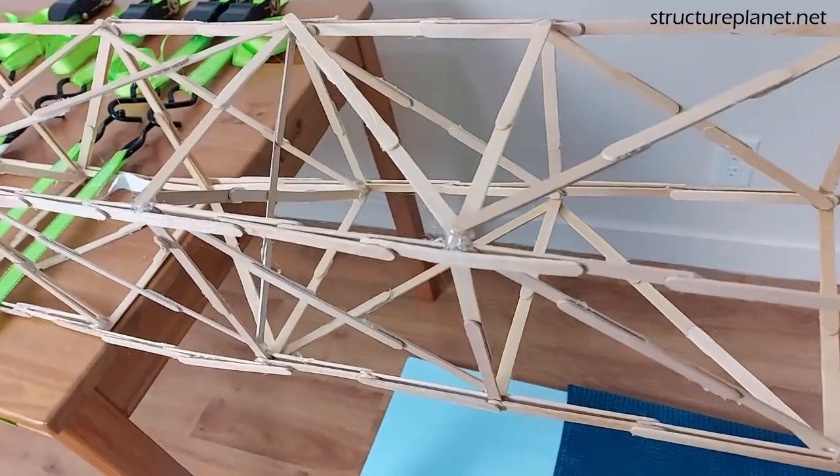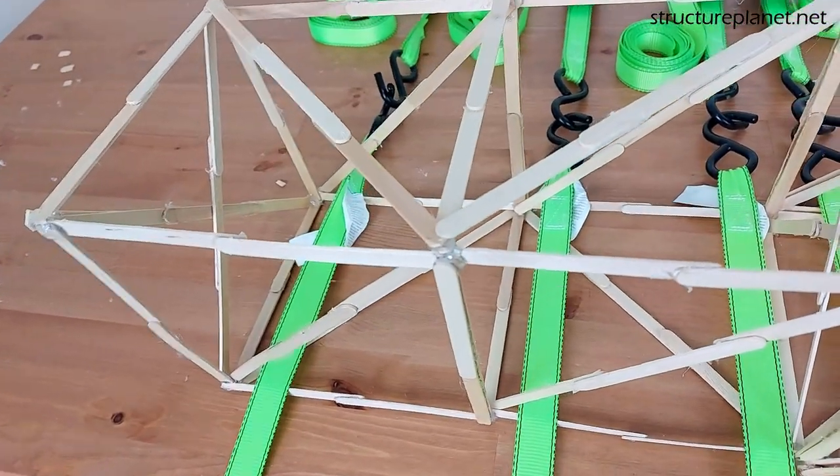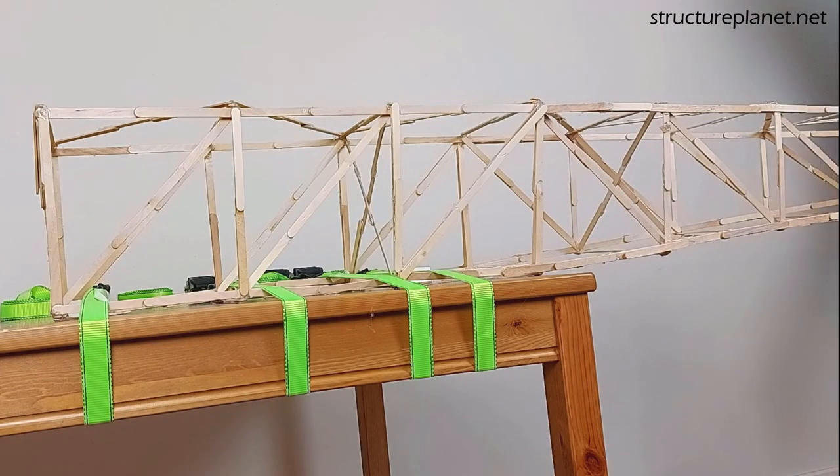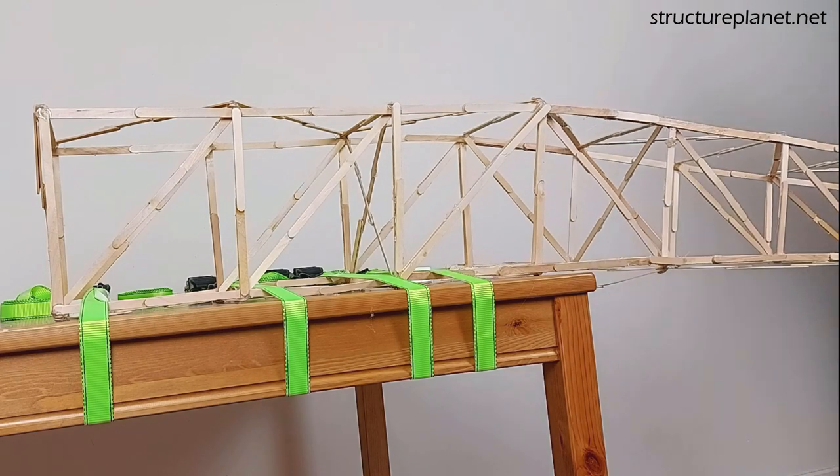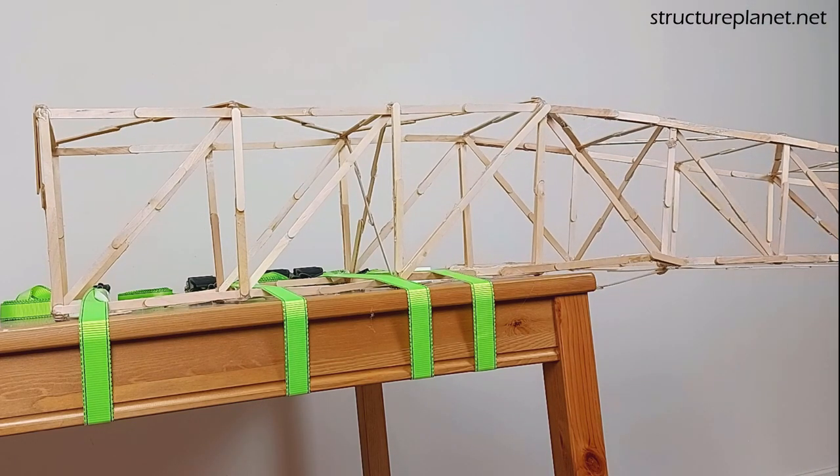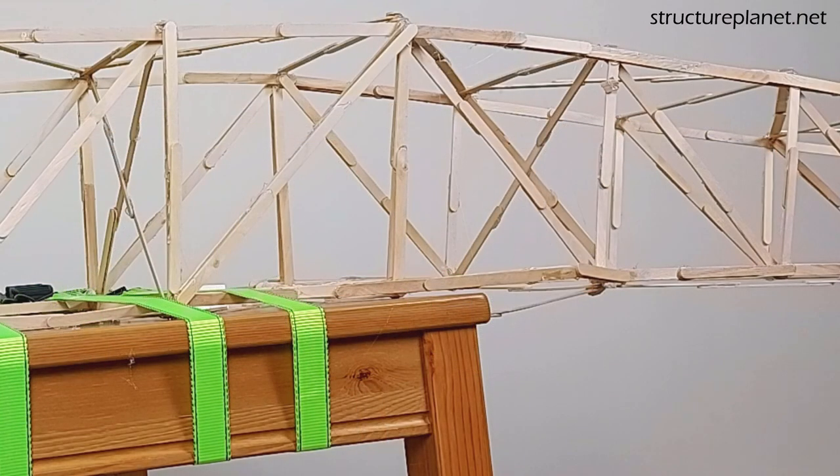As a quick test, I replaced the failed member and added four cross-bracing inside the structure to see if the lean would go away and if the load capacity or failing member would be different this time. The cantilever failed at the same location and with the same load as before but without the lean this time.